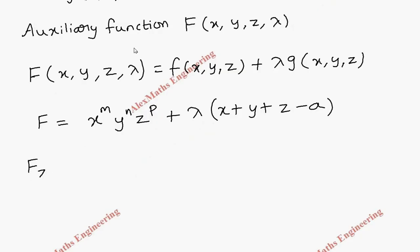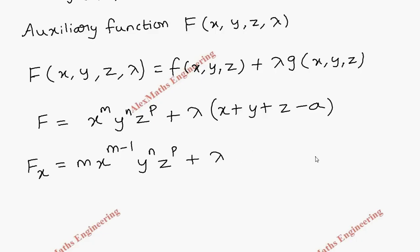For the procedure, we find the partial derivative of F with respect to x. The differentiation of x^m is m·x^(m−1), and the rest of the terms are constant, so we get m·x^(m−1)·y^n·z^p + λ.